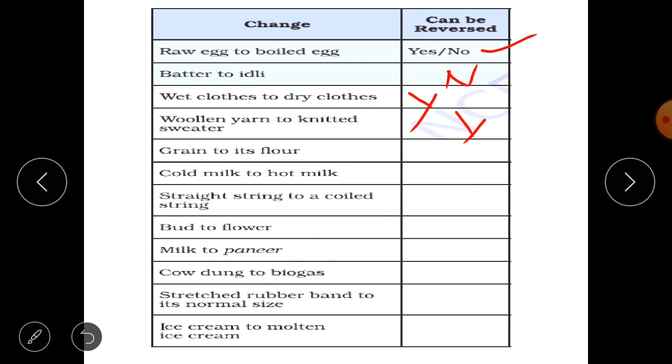Grain to its flour. If you have turned the grain into flour then you cannot get back the grain. So no. Cold milk to hot milk. Yes that's a reversible change. You can again make it cold. Straight string to coiled string. Of course it's a reversible change.